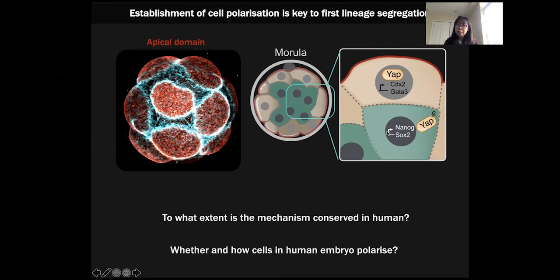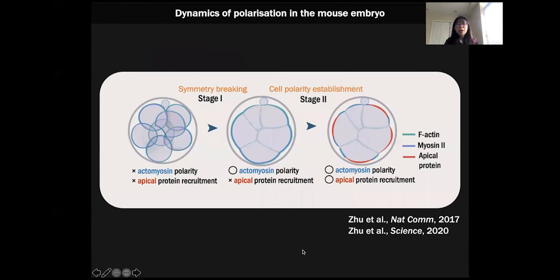We want to understand to what extent this mechanism holds in the human embryo. For that, we first ask the question: as polarity is so important, whether and how do cells in the human embryo polarize? We earlier characterized that in the mouse embryo, the establishment of the apical domain happens roughly at the same time as embryo compaction and can be divided into two distinguished stages. In the first stage, F-actin, which is a key component in the actomyosin complex, becomes polarized to the cell-contact-free surface. This is followed by the polarization of evolutionarily conserved polarity proteins such as the Par complex. We want to understand whether this dynamics is also conserved in humans.